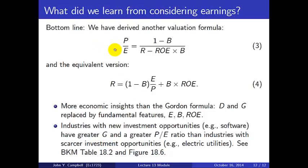The bottom line is we've derived another valuation formula. P over E is related to payout on the top and the bottom, and whether retention or payout is increasing value or lowering it depends on the balance of R and ROE. There are more economic insights here than from the Gordon formula, because dividends and growth rates are replaced by more fundamental features of the firm: its earnings, its retention ratio, and its ROE. Looking at data in Bodie, Kane and Marcus chapter 18, industries with new investment opportunities such as software have faster growth and higher P/E ratios than industries with scarcer investment opportunities such as electric utilities.